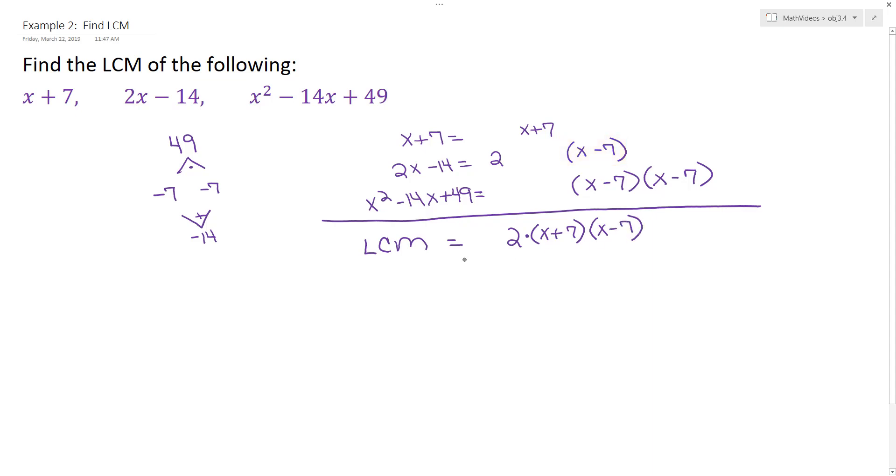And then for our third expression, x squared minus 14x plus 49, it says we need to have a factor of x minus 7. Well, we already have that accounted for. And we also need another factor of x minus 7, which we are missing. So we can multiply it in.